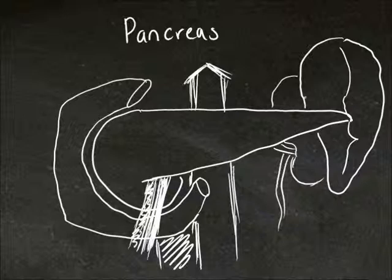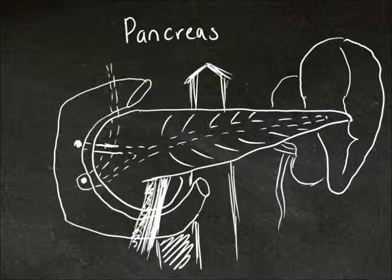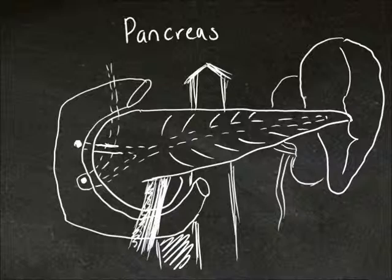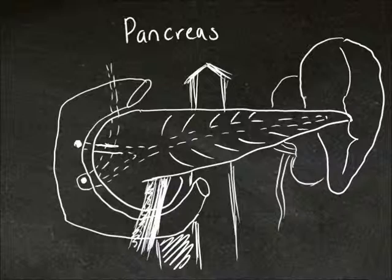Let's take a look at the duct system. Here we have lobular ducts draining into the main pancreatic duct, which drains into the greater duodenal papilla. Coming off the main pancreatic duct is the accessory pancreatic duct, which is a variation, so it's not found in everyone. This drains into the lesser duodenal papilla, which is found above the greater duodenal papilla. Coming in here we have the bile duct, which runs behind the accessory pancreatic duct and into the greater duodenal papilla. Sometimes the main pancreatic duct and the bile duct can come together, forming the hepatopancreatic ampulla, which then drains into the greater duodenal papilla.